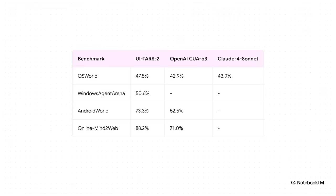They tested this thing on a whole range of super difficult benchmarks. We're talking operating systems, mobile apps, and web browsing. And UITRS2 consistently comes out on top. And it's not just beating random models. It's outperforming really powerful proprietary agents from OpenAI and Anthropic. Just look at these numbers for OS world, Android world, and especially that last one, online mind to web.